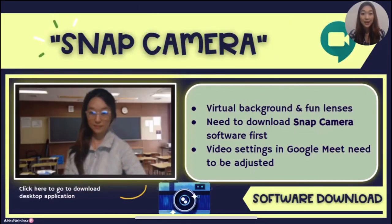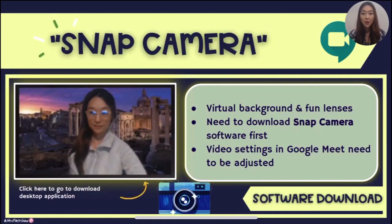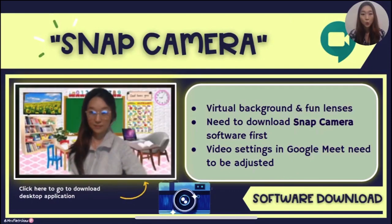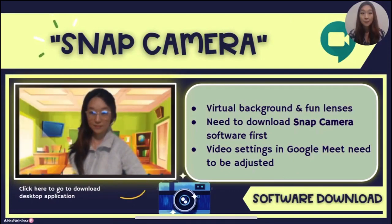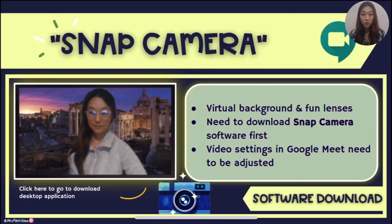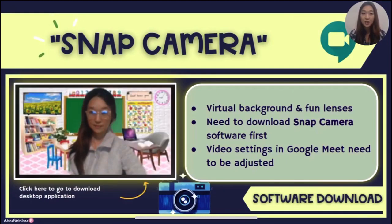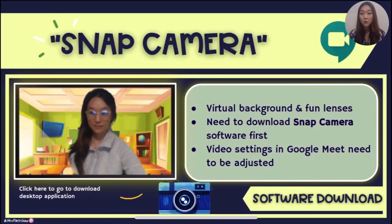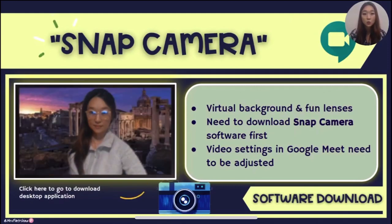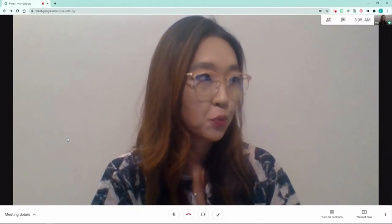The next little trick is using Snap Camera. Unlike Zoom, Google Meet doesn't offer an option for virtual backgrounds during meetings. Snap Camera is not a Chrome extension but a free desktop application that brings fun lenses and backdrops to your computer and camera. You will need to first download the software to your laptop or computer, choose your favorite virtual background or lens filters, and then adjust the video settings in Google Meet so that these add-ons show in your Meet sessions.